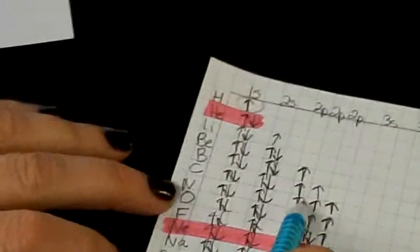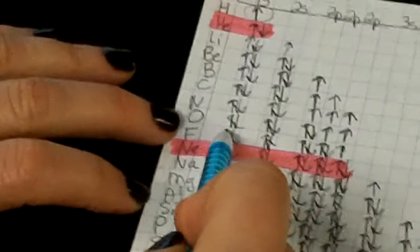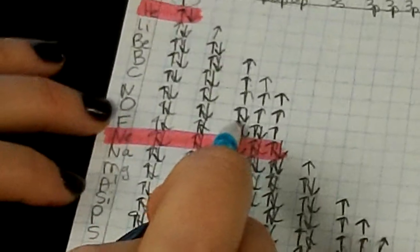Nitrogen, one, two, three, four, five, six, seven, but then by the time we get to oxygen, we have to start doubling up in this 2P orbital.